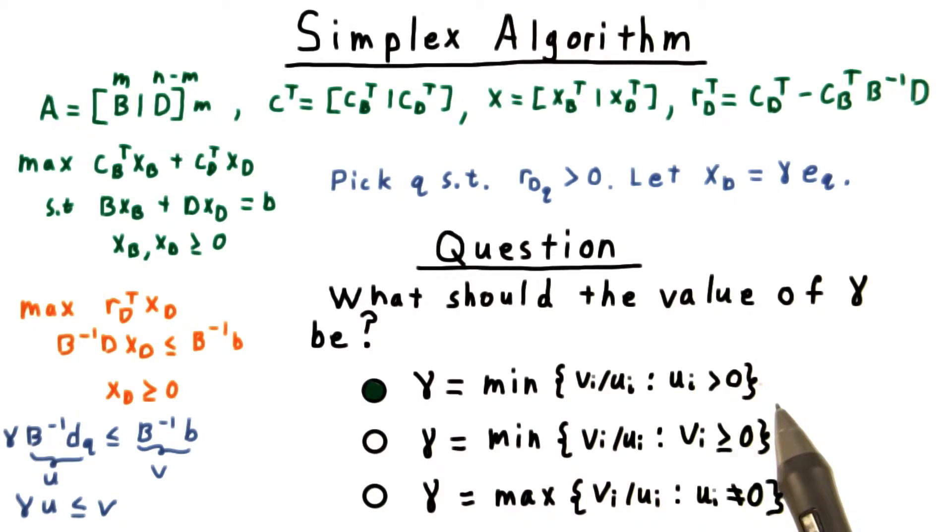The answer is this first expression here. Unless ui is positive, we can make gamma as big as we want without running into the constraint here. And of these constraints, we hit the one where this ratio is lowest first.